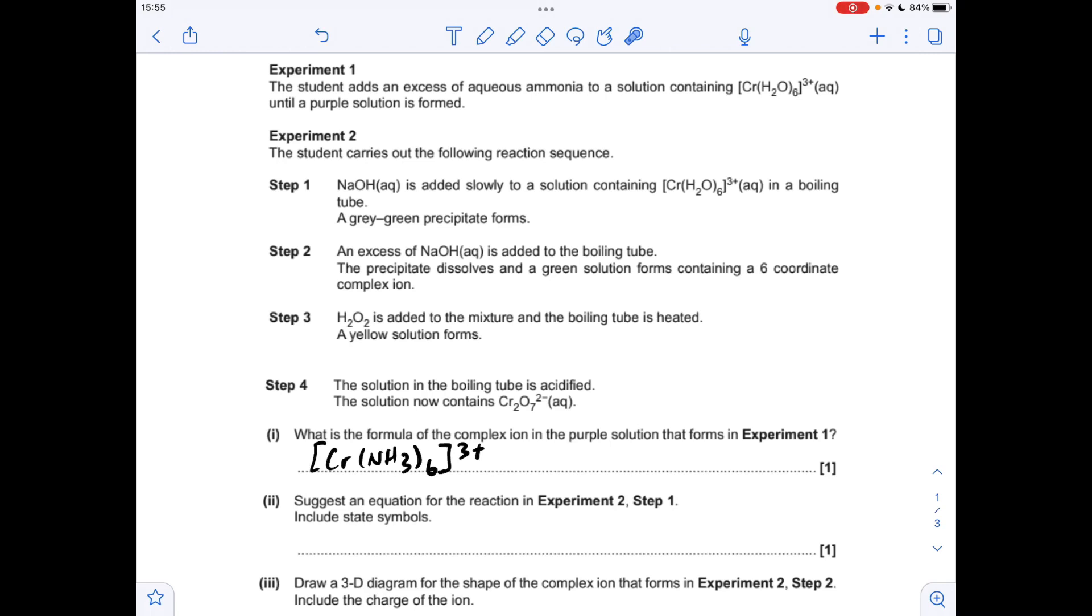Next part, so Experiment 2, Step 1, when you add a small amount of sodium hydroxide to this, we're going to get the chromium 3 hydroxide precipitate. So in terms of the equation, you can either give the full equation like that, or you can give the simplified equation.